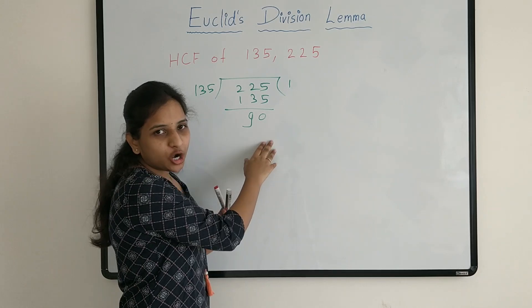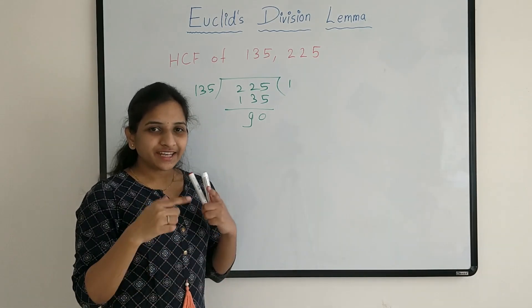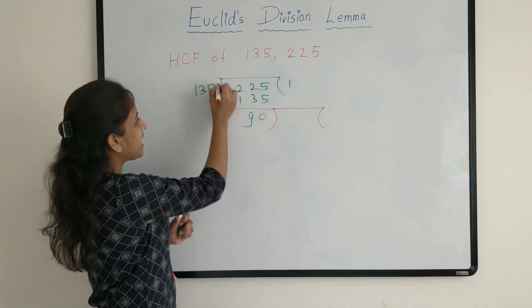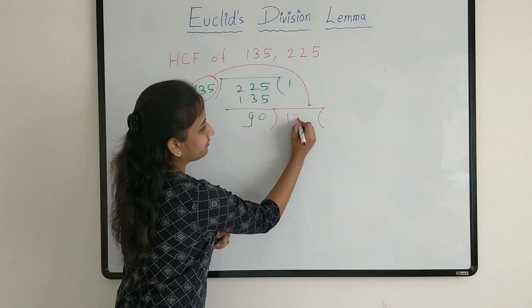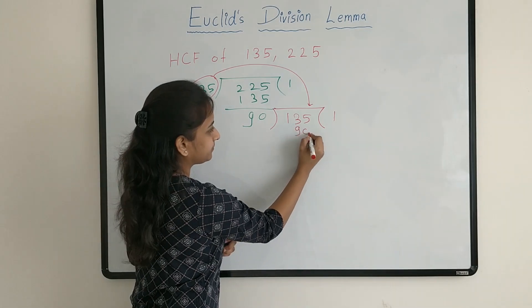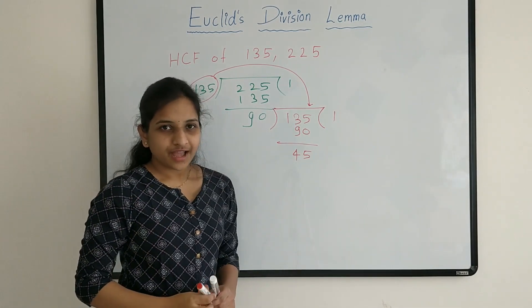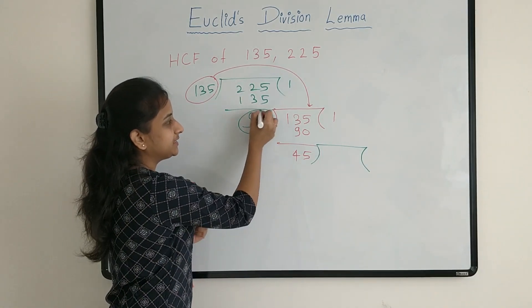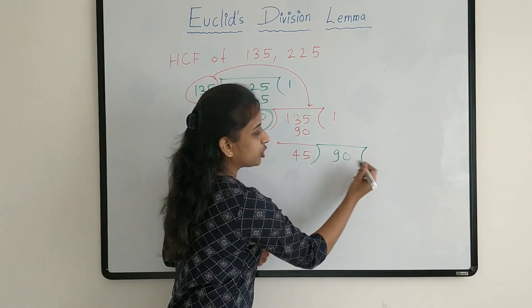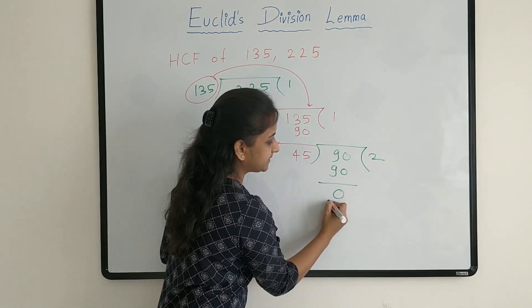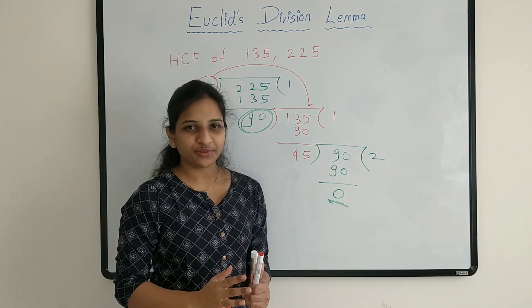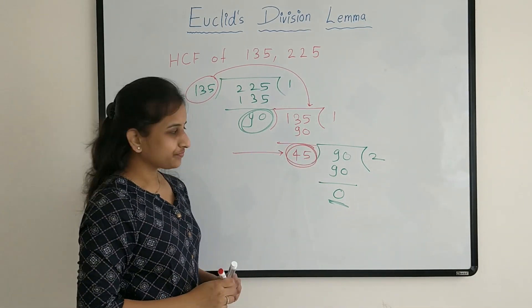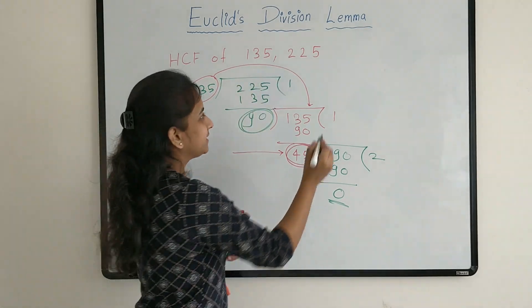Our remainder is not 0, so we should go for the next division. In the next division we divide the divisor by the remainder. I am sending this divisor 135 inside. Now quotient is 1 and the remainder is 45. Again remainder is not 0, so we go for the next division. In the next division I am sending this 90 inside. Now quotient is 2 and the remainder is 0. We got remainder as 0, so we stop the process. The HCF value is the last divisor — 45. So HCF of 135 and 225 is 45.